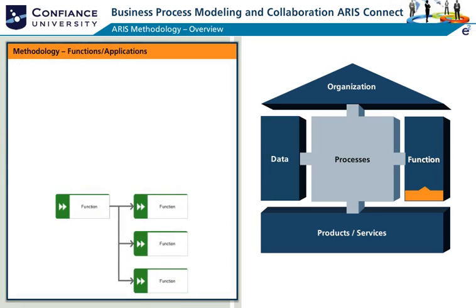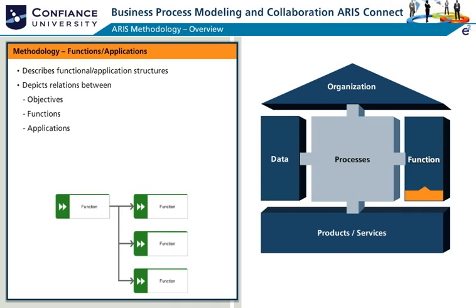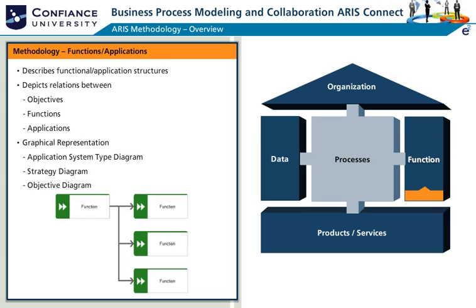The function view describes functional hierarchies and systems or applications used to execute functions. It depicts relations between objectives, functions, applications, and others. Some of the typically used graphical representations are the model types: application system type diagram, strategy diagram, and objective diagram.